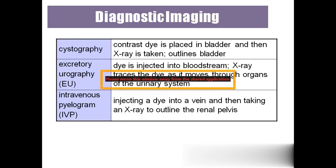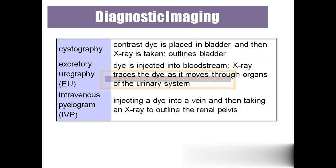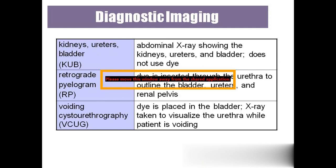Cystography: 'cysto' means bladder, 'graphy' means x-ray — an x-ray of the bladder taken after injecting a contrast dye. Excretory urography: dye is injected into the bloodstream and an x-ray of the entire urinary system is taken. Intravenous pyelogram: 'pyelo' means renal pelvis, 'gram' means x-ray — an x-ray of the renal pelvis taken after injecting dye into a vein. KUB (Kidney, Ureter, and Bladder): an x-ray of the entire kidney, ureter, and bladder without using any dye.